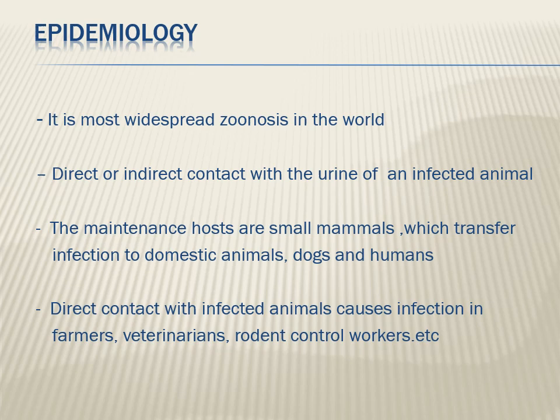Regarding epidemiology, leptospirosis is a zoonotic disease, meaning we get this infection from animals through direct or indirect contact with the urine of infected animals — mainly rodents. There are three important risk factors to remember, the three R's: Rodents, Rainfall or floods, and Rice fields. The maintenance hosts for this bacteria are small mammals.